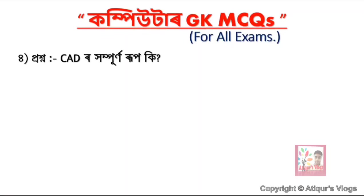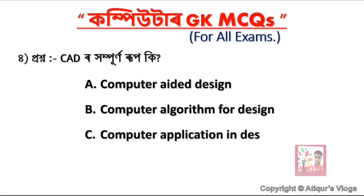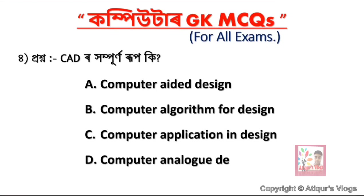The next question asks about the full form of CAD. Option A is Computer Added Design, option B is Computer Algorithm for Design, option C is Computer Application in Design, and option D is Computer Analog Design. Option A is the correct answer: Computer Added Design — that is the full form of CAD.